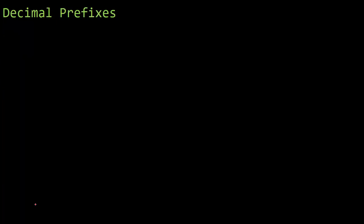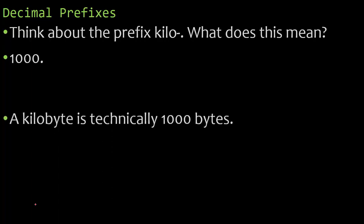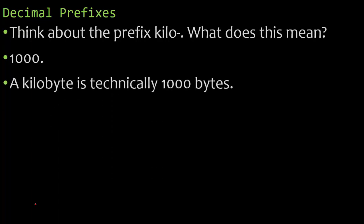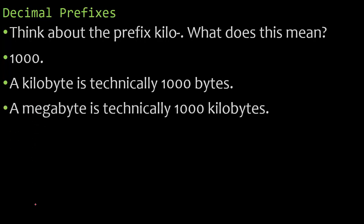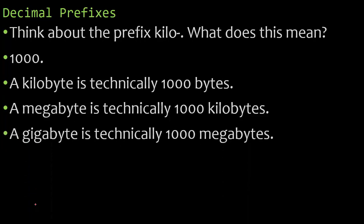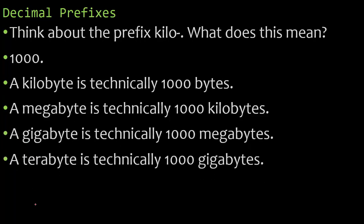Decimal prefixes are the ones that you're familiar with. Think about the prefix kilo. What does that mean? Most people will tell you that means a thousand. So a kilobyte is technically 1,000 bytes. A megabyte is technically 1,000 kilobytes. A gigabyte is technically 1,000 megabytes. A terabyte is technically 1,000 gigabytes.